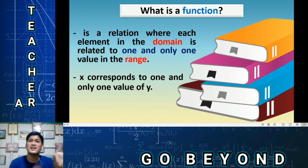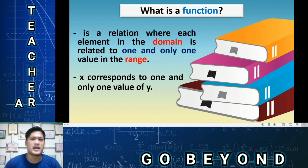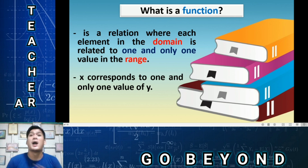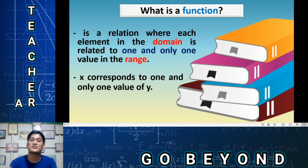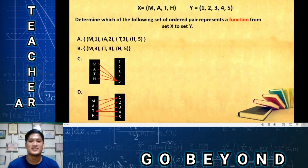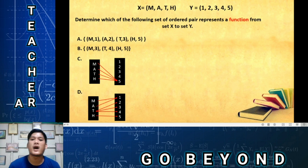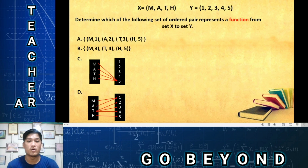The x, which is in the first values, should correspond to only one value of y for us to say the relation is a function. Now let's try to have a practice. We have set x with elements m, a, t, h, c, y and set y with elements 1, 2, 3, 4, 5. Determine which of the following sets of ordered pairs represents a function from set x to set y.